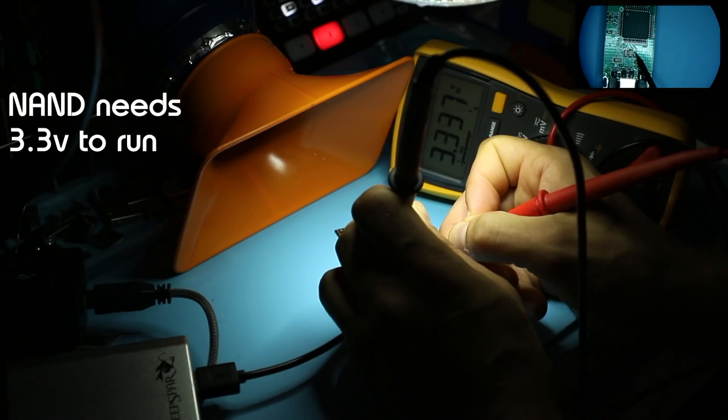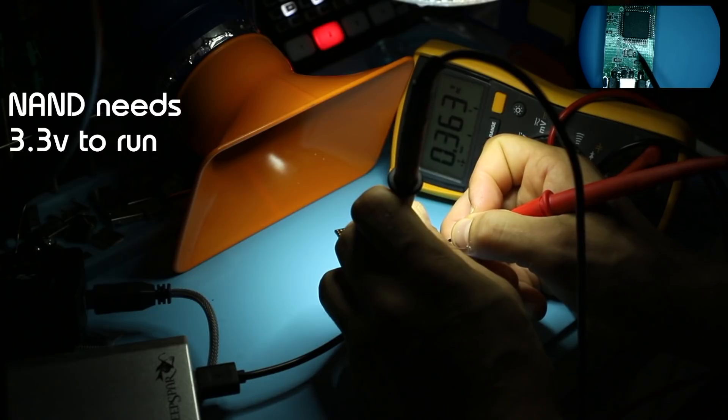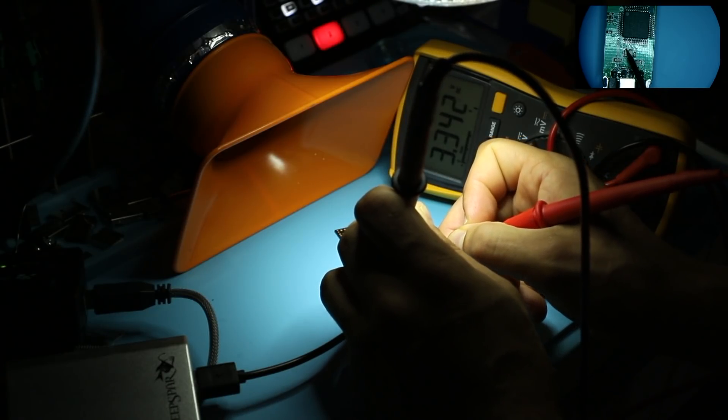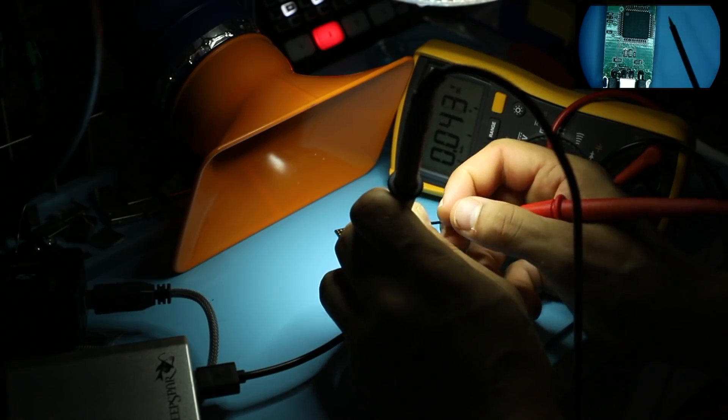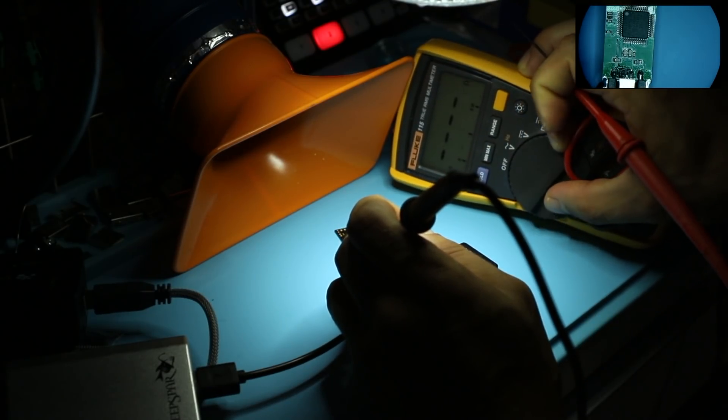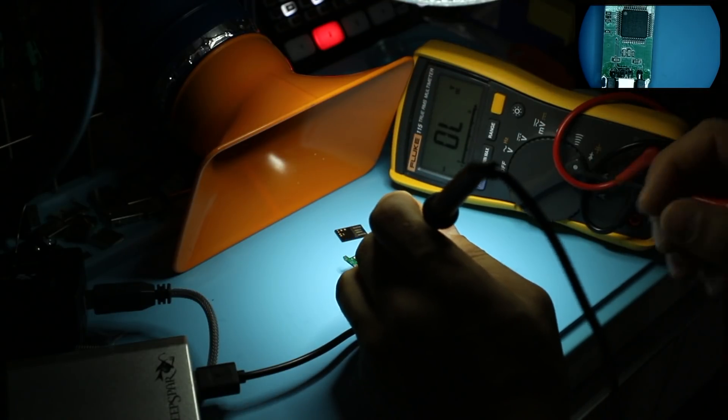3.3, 3.3, 1.2, 3.3. We're getting power out of the controller as well. Let's set this back to diode test mode.